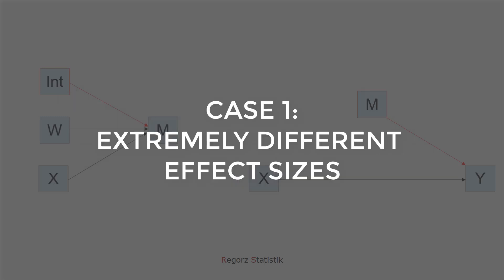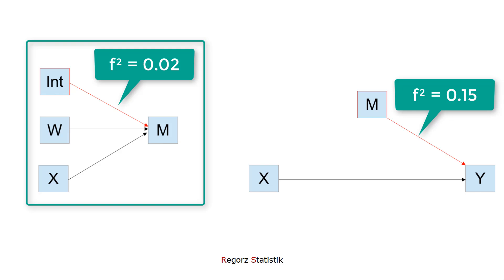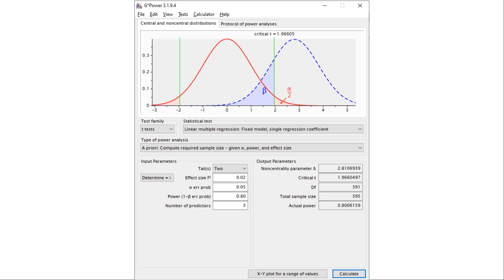Let's start with extremely different effect sizes. Let's assume we expect a medium-sized B-path but only a small effect for the interaction for the A-path. In our calculation, we always start with the smaller of the two effects, because that's the bottleneck when it comes to power and sample size. So we start with calculating the necessary sample size — in this case for the interaction for the A-path. This is GPower; you'll find a link to the free software in the video description.